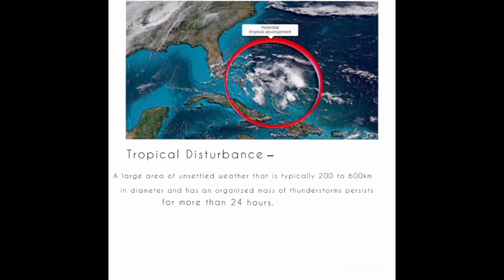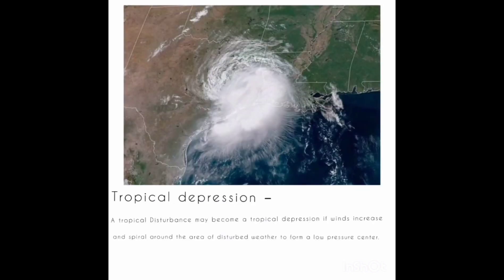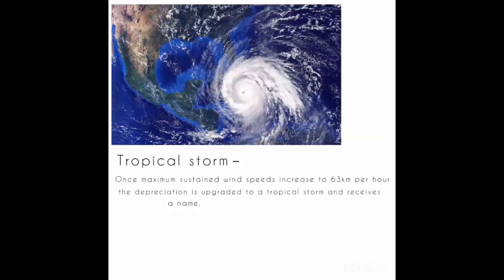From tropical disturbance to a hurricane or typhoon: A tropical disturbance is a large area of unsettled weather, typically 200 to 600 kilometers in diameter, with an organized mass of thunderstorms that persists for more than 24 hours. A tropical depression forms if winds increase and spiral around the area of disturbed weather to form a low-pressure center. Once maximum sustained wind speed increases to 63 kilometers per hour, it is upgraded to a tropical storm and receives a name.